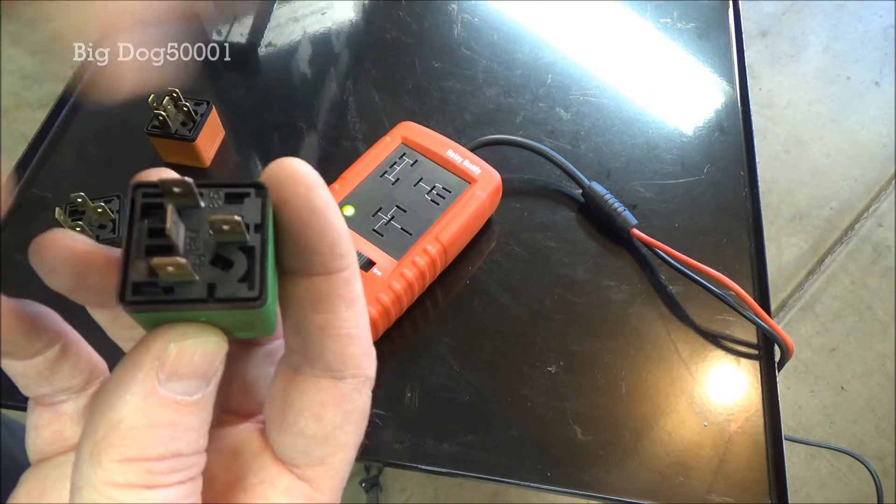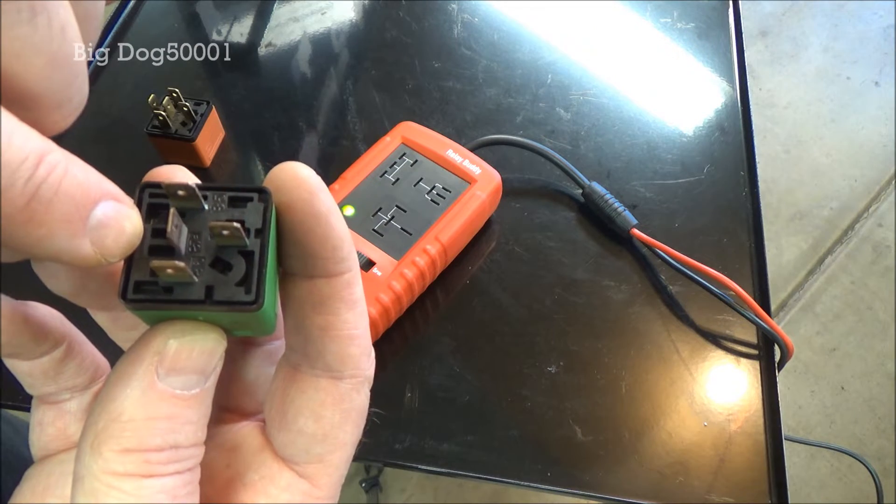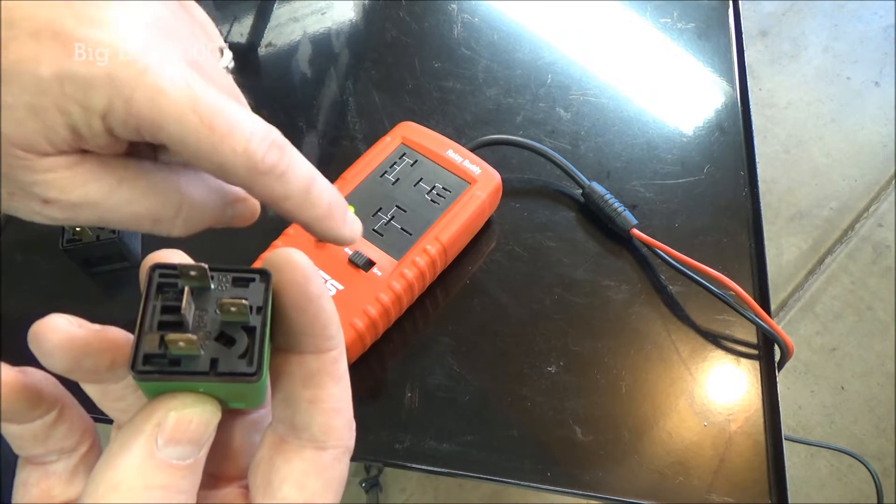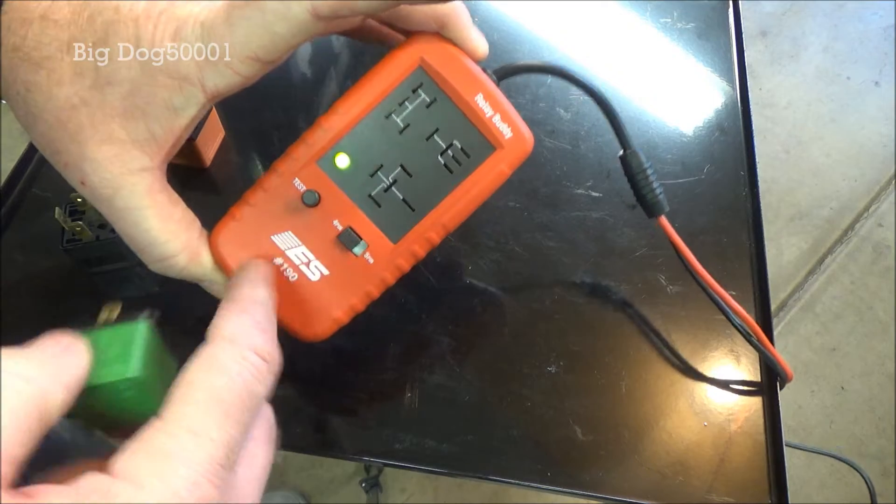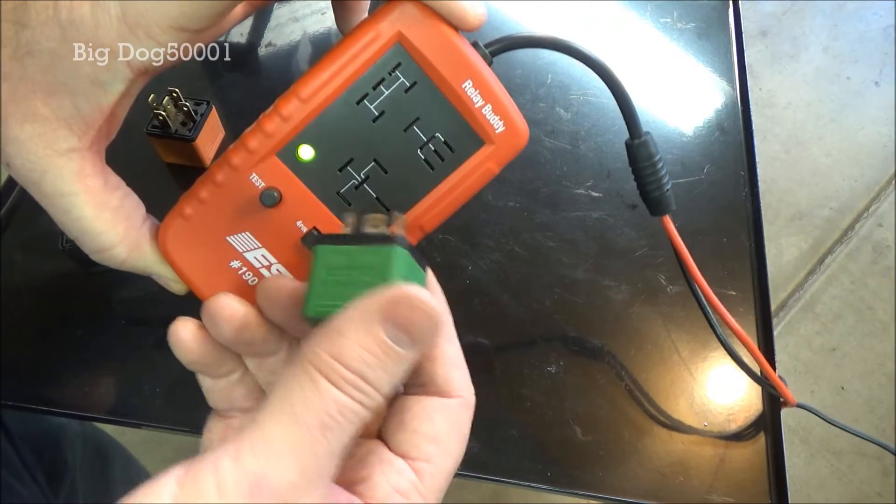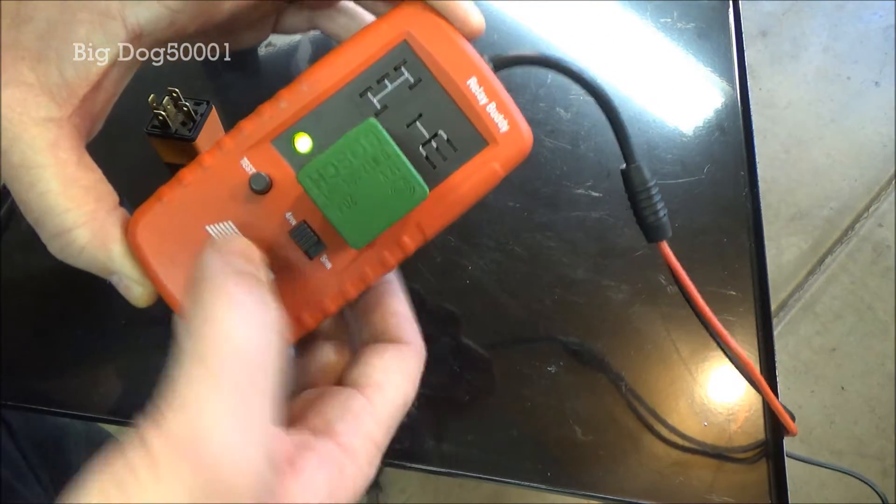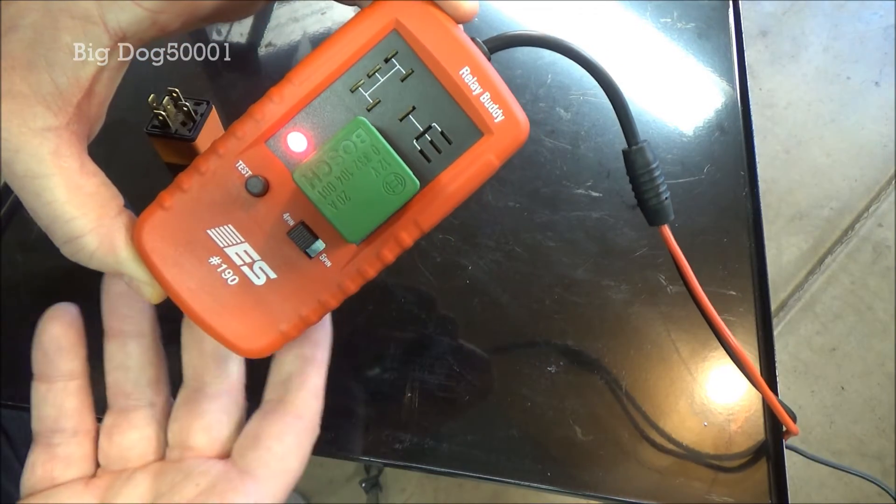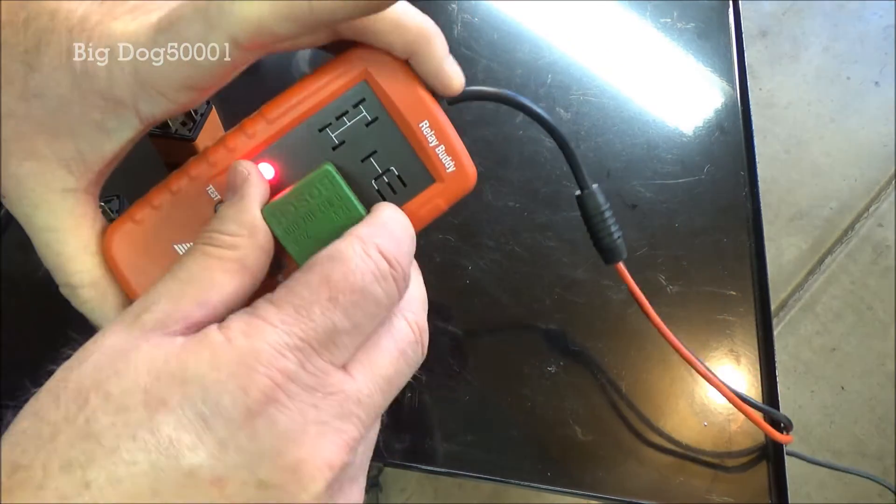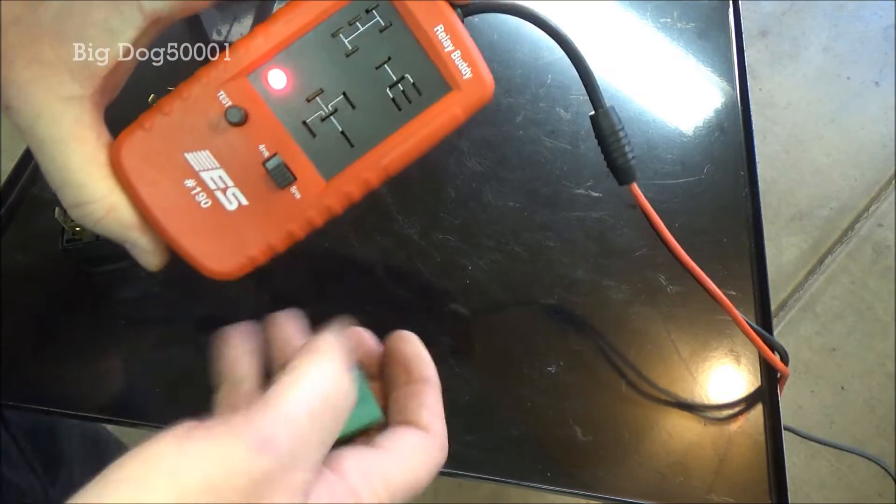This one is a normally closed, and then when it opens it does not have a fifth pin to open to. And so it will fool the Fuse Buddy here, or the relay buddy. Watch, I'll show you. We'll put it on four pin—you can see it won't even test. And if we put it on five pin, it'll click it once and then fail it immediately.